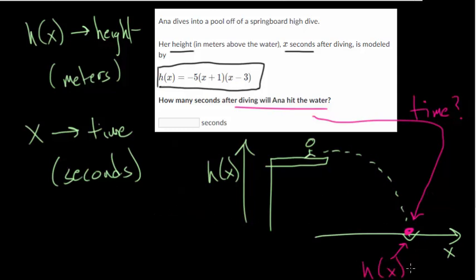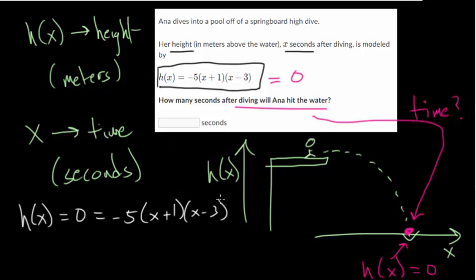In this case, our function h(x) is equal to 0. And so we can set our equation equal to 0 and then solve. Let's do that right here. We have that h(x) is 0, and this is equal to -5 times (x + 1) times (x - 3).